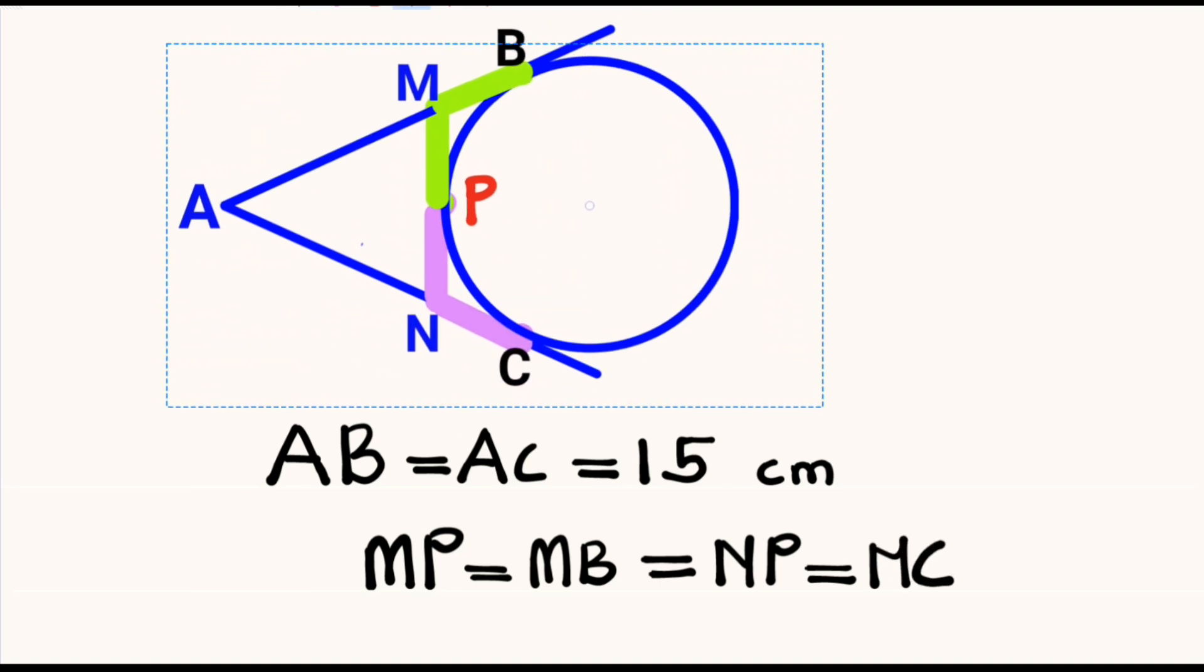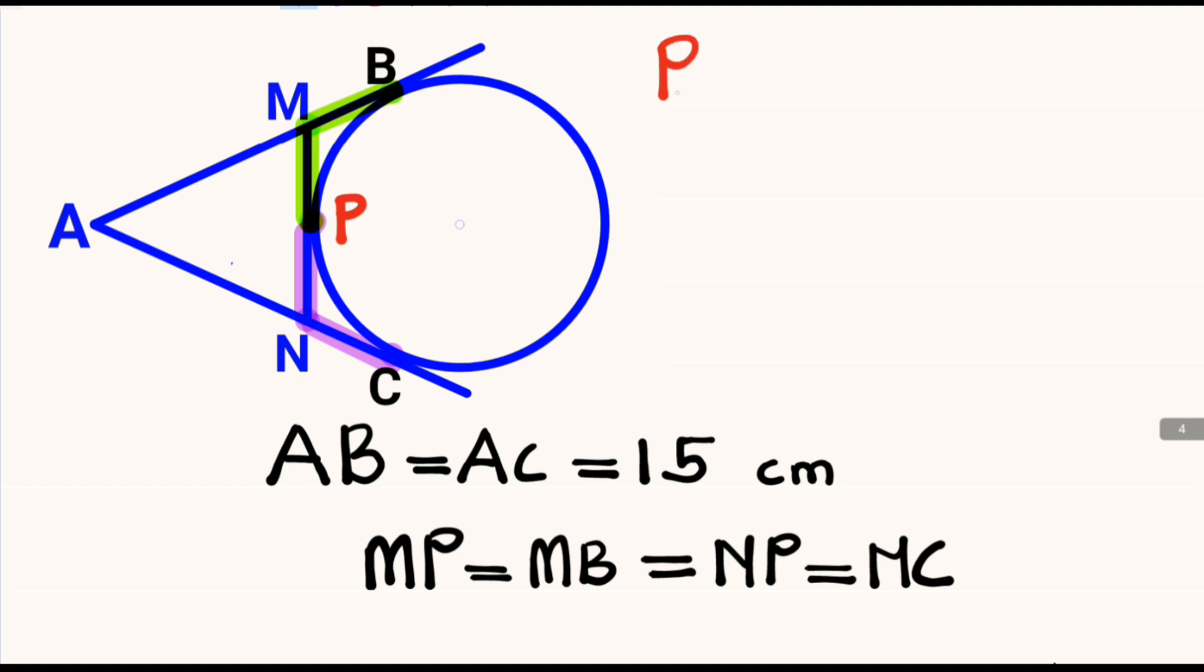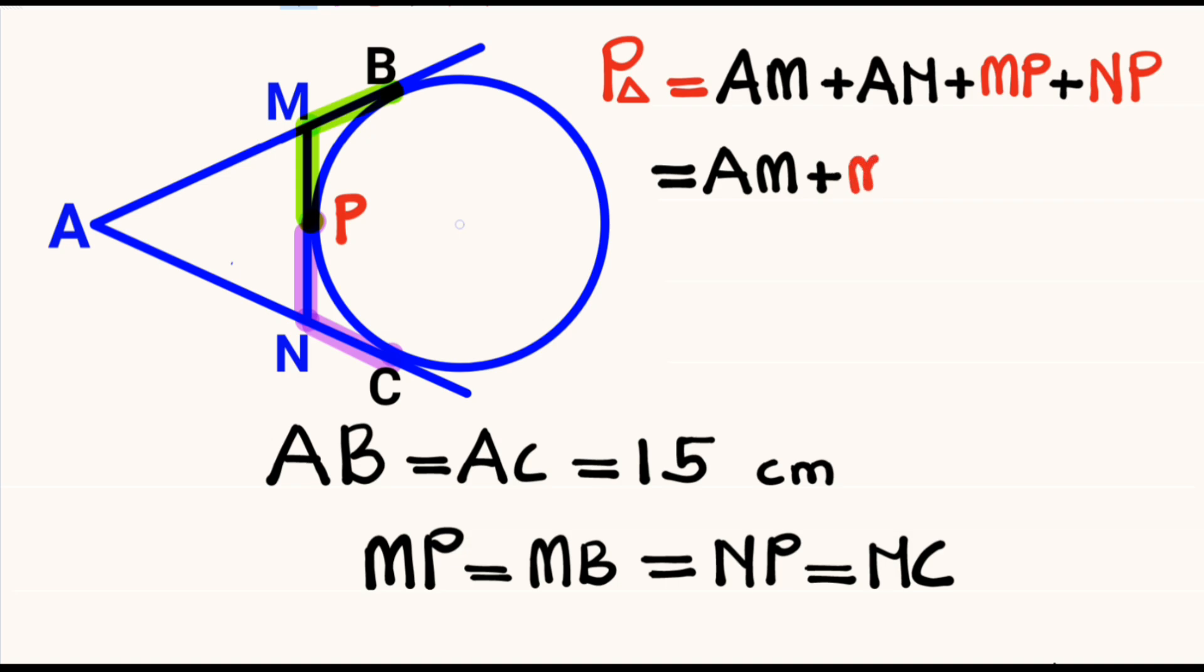We deduce the formula for the perimeter of triangle AMN. The perimeter of the triangle will be equal to the length AM plus the length AN plus the length MP plus the length NP. Our perimeter will be equal to AM plus MP plus AN plus NP.